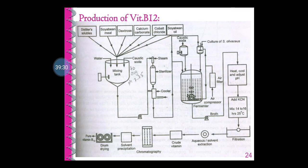After filtration, the broth is exposed to extraction using aqueous or solvent treatment. After extraction, a crude vitamin is obtained along with cell debris. This crude vitamin is exposed to chromatographic technique for separation of cell debris and intermediate products to obtain pure vitamin B12. With the help of chromatography, solvent precipitation, and drum drying technique, pure vitamin B12 is eventually formed.